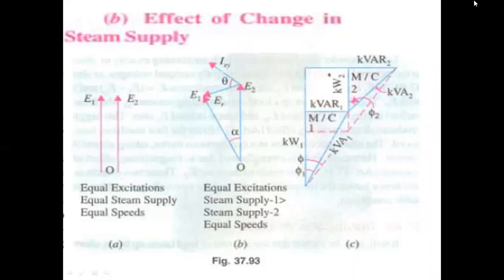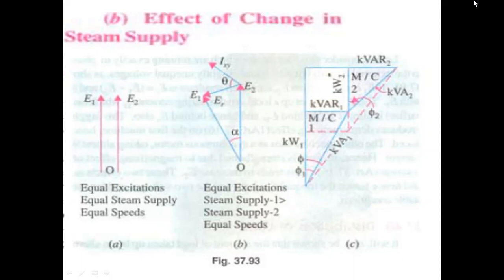Because the machines are tied together, even though we increase the steam supply to the first alternator, it cannot run with more speed than the second alternator. However, it will utilize the increased power input for carrying more load than alternator two — that is the only advantage.